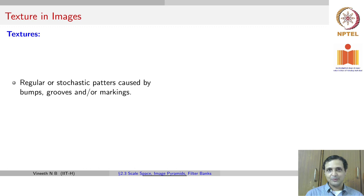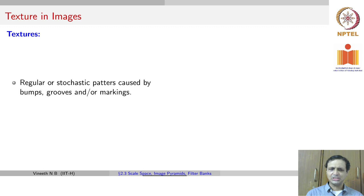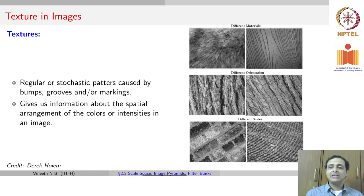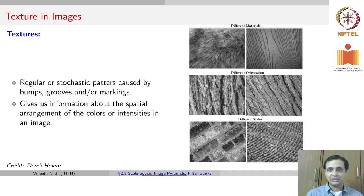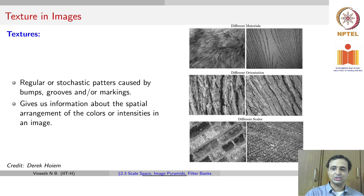Moving on from image pyramids, we cover textures — the third topic of this lecture. Textures are regular or stochastic patterns caused by bumps, grooves, and markings. They give us information about the spatial arrangement of colors or intensities in an image. Textures can give you an idea of materials, orientation, and scale, and contain significant information for making higher-level decisions or predictions from images.